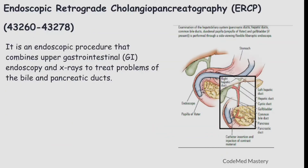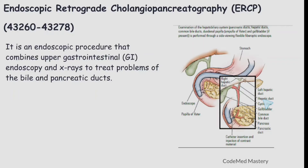Next is endoscopic retrograde cholangiopancreatography (ERCP), code range 43260 to 43278. It is an endoscopic procedure that combines upper gastrointestinal tract endoscopy and X-rays to treat problems of the bile and pancreatic ducts.